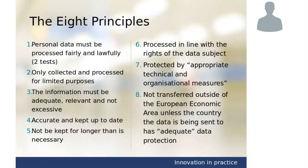Point six covers data subject rights, which we'll look at in a moment. Point seven covers what measures need to be put in place by data controllers — and going forward from May, this also applies to data processors for the first time. Both would have to have appropriate measures in place to protect against data being accidentally lost, destroyed, or disclosed to a third party without permission. There is some guidance on what constitutes appropriate measures in certain scenarios — for example, the ICO has guidance on cloud computing for businesses that use or provide cloud hosting services.